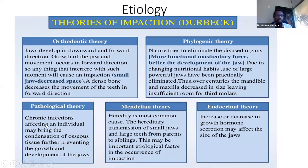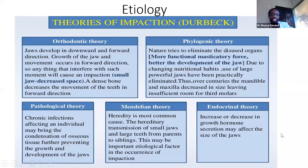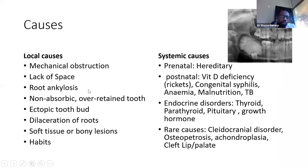The pathological theory includes tumors and ameloblastomas that can obstruct the eruptive pathway. The Mendelian theory identifies a hereditary component. There is also an endocrine theory, since endocrine diseases can contribute to impaction. So if a patient asks what caused their impaction, we are quick to say 'your jaw is small,' but please note there are other factors at play — it could be endocrine diseases.